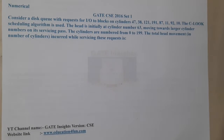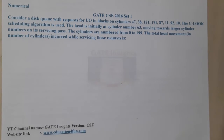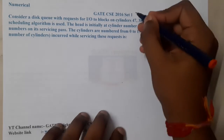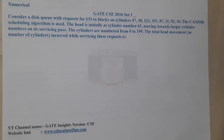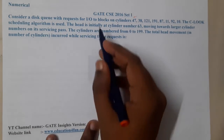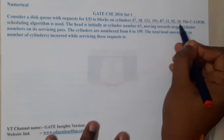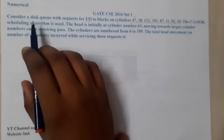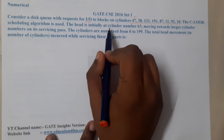Hello guys, welcome back to our next lecture. This question belongs to GATE CSC 2016 Set 1. The given question is: consider a disk with requests for I/O to blocks on cylinders. The C-LOOK scheduling algorithm is used.